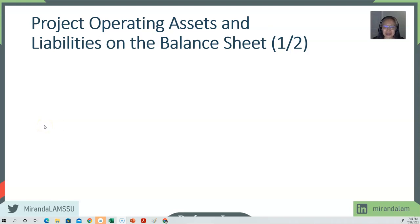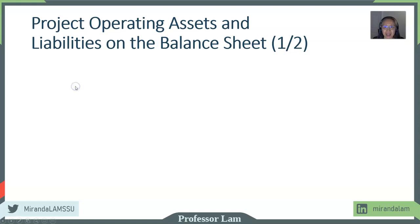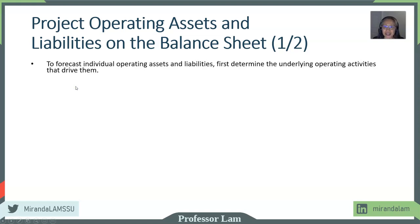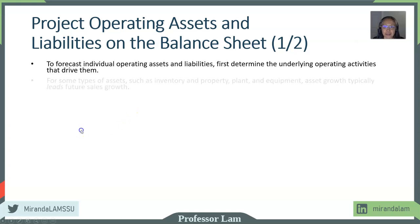Welcome back. We're going to continue with forecasting financial statements. In this video, we're going to look at how we project operating assets and liabilities. There are a lot of factors to take into account. First, we have to determine the underlying operating activities, making sure that we are internally consistent. We need to know the operating strategy of the firm that is consistent with the operating expenses that we forecasted.